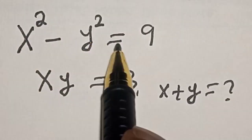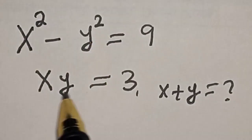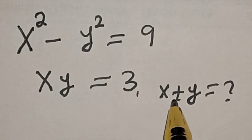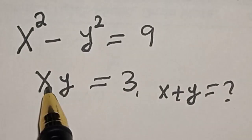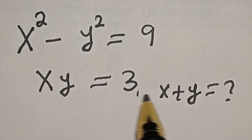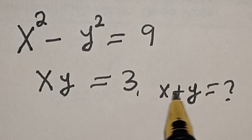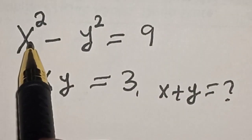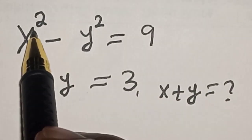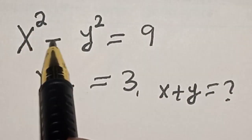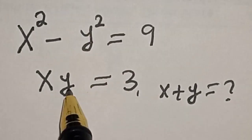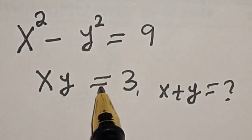x squared minus y squared is equal to 9, xy is equal to 3. What is the value of x plus y? Hi everyone, welcome to my class. In this class, we're going to find the value of x plus y from this given question: x squared minus y squared is equal to 9 and xy is equal to 3.